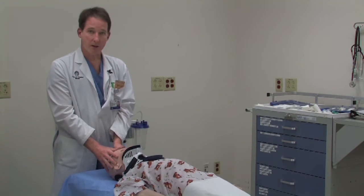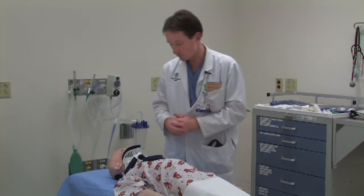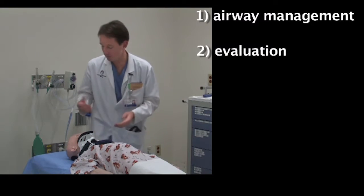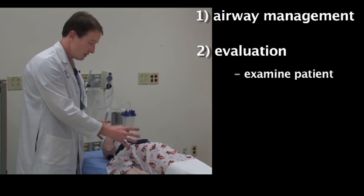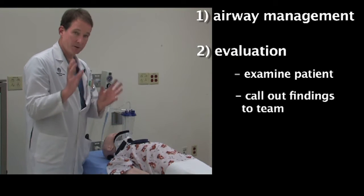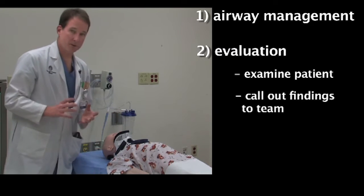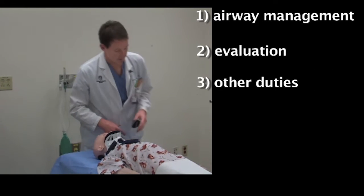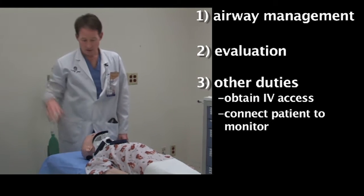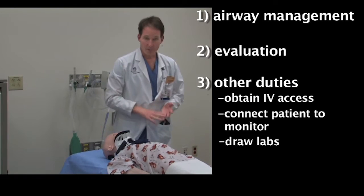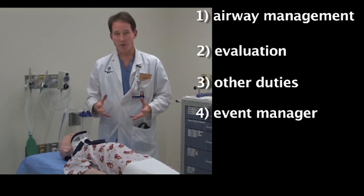So step one: who's going to do the airway? Another skill that's necessary is the evaluator. Typically I would evaluate the patient from the right side. Someone's got to examine the patient, call out the findings to the team, and just walk down head to toe. We'll talk about the primary and secondary survey. The third role is starting IVs, connecting the patient to monitors. Someone's got to draw labs, do those other duties that happen during the resuscitation. And then finally, who's in charge?